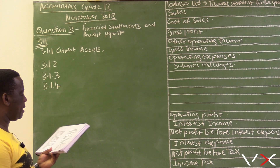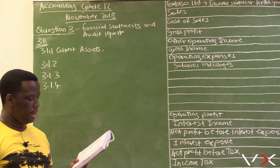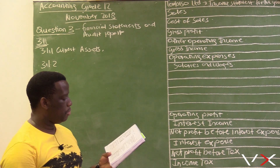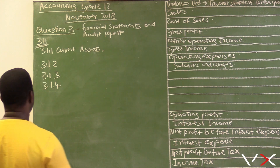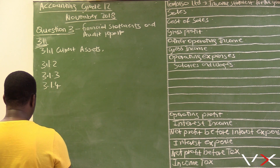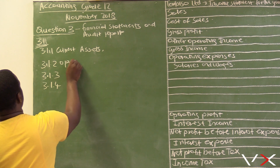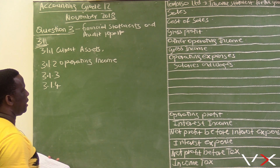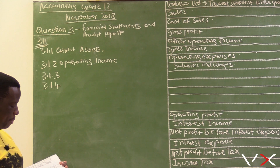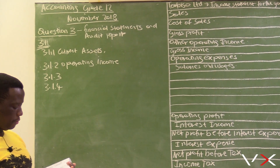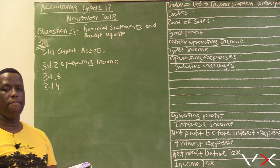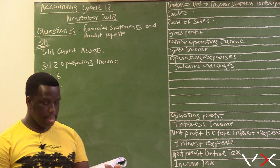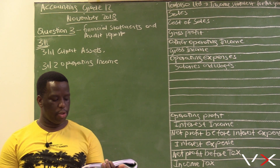For 3.1.2, the adjustment of provision for bad debts is found in the income statement. If it is a decrease, that adjustment becomes an income, so the best option is operating income. If we are decreasing provision for bad debts, the adjustment becomes operating income. If we were increasing it, that would have been an operating expense.